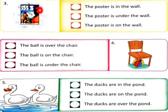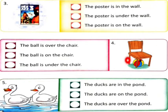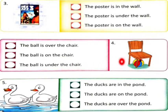Third: Yeh picture hai, ismein diwar par posture laga hua hai. Now read the sentences: 'The posture is in the wall,' 'The posture is under the wall,' 'The posture is on the wall.' Yeh aapne dekhna hai aur correct sentence ko tick karna hai. Now fourth picture: The sentences are 'The ball is over the chair,' 'The ball is on the chair,' 'The ball is under the chair.' Ball chair ke kahaan hai, use dekhte hue aap sentence ko tick kar denge.